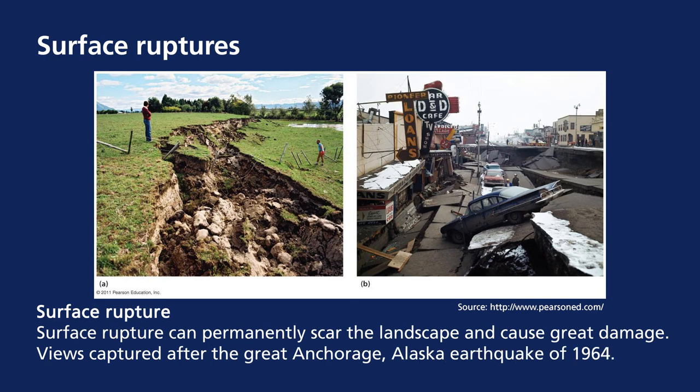Surface ruptures can permanently scar the landscape and cause great damage. A farm was literally split in half, and a city's landscape was permanently altered by an earthquake in Alaska in 1964.